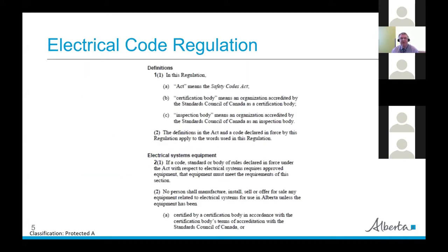There's a screenshot of what it looks like inside. It gives a couple of definitions of the Act — what a certification body is, what an inspection body is. When you see the word 'inspection' in that context, it's talking about equipment, not installation. The equipment piece is down below there, and it tells you basically what has to be done for electrical equipment in the province of Alberta.